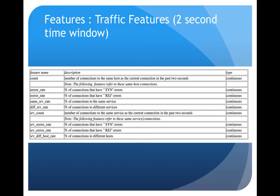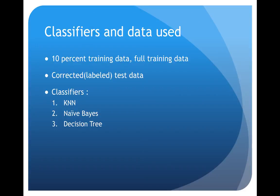Now what did I try with the datasets that I had? I firstly used the 10 percent training dataset and then I went on to using the full training dataset. I used the corrected or labeled test dataset because only then I could identify the accuracy of my model. The classifiers that I used were KNN, Naive Bayes, and decision trees.